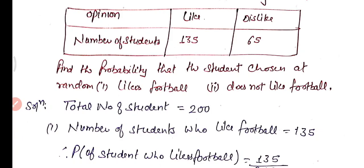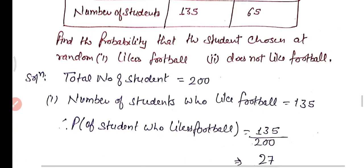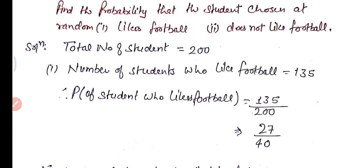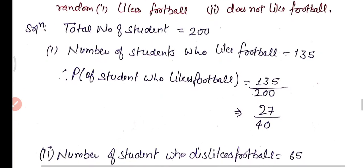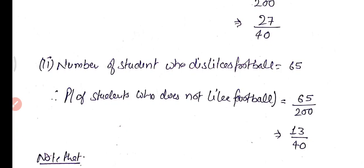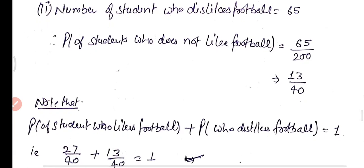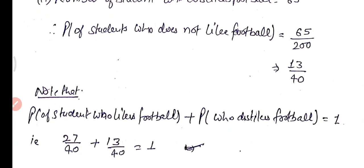Total number of students is 200. Number of students who like football equals 135. So the probability that a student likes football equals 135 upon 200, which simplifies to 27 upon 40 — since 5 is the GCF of 135 and 200. Number of students who dislike football is 65, so the probability that a student does not like football is 65 upon 200, which equals 13 upon 40.